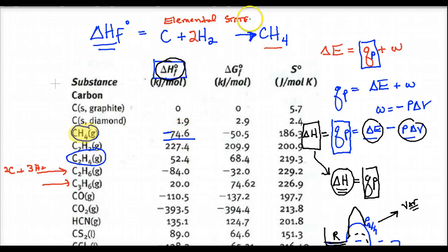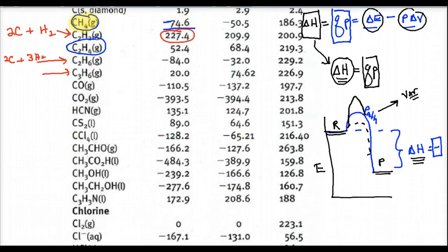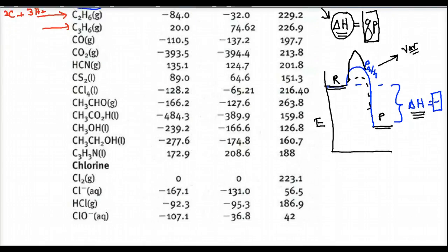You should know that energy is always released when you form a bond from the elements. So you may ask, how come some of these delta Hs are positive? Well, for some compounds like C2H2, you made something that was more unstable than the elemental form. Most things when they bond are more stable, that's why most delta Hs are negative. But some are positive — those compounds are actually more unstable than their elemental states.